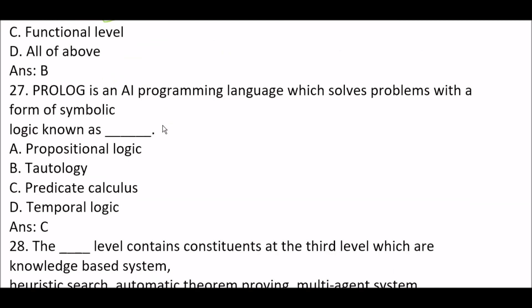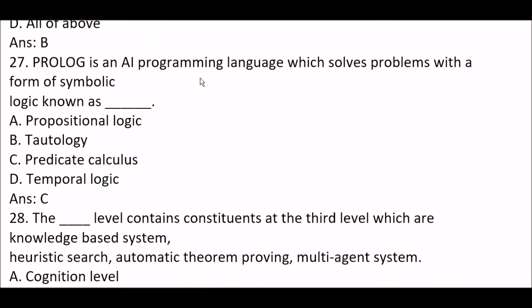Next question: Prolog is an AI programming language which solves problems with a form of symbolic logic known as — Option A: propositional logic. Option B: tautology. Option C: predicate calculus. Option D: temporal logic. The right answer is Option C — predicate calculus.